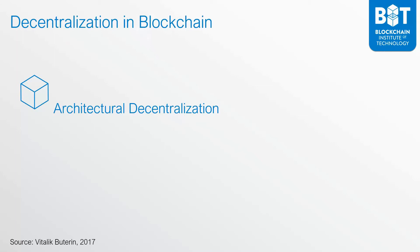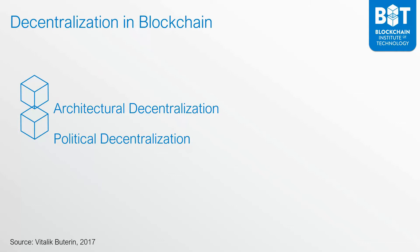According to Vitalik Buterin, co-founder of Ethereum, the next type of decentralization is political decentralization. When you look at political decentralization in the context of Bitcoin, Bitcoin is also politically decentralized because there is no CEO of Bitcoin that sets the rules. All these different computers around the world are running the Bitcoin protocol, but there is no CEO that controls all those computers. So Bitcoin is not only architecturally decentralized because it runs on multiple computers — it is also politically decentralized because there's no CEO or controller on top that tells the Bitcoin network what to do.